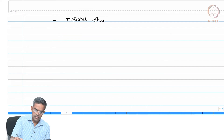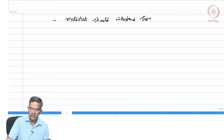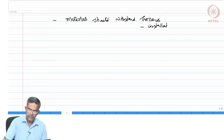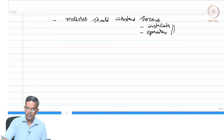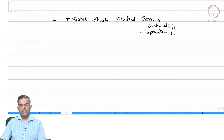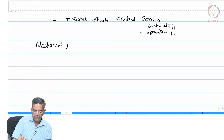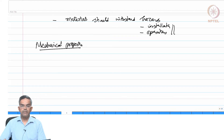Furthermore, materials should withstand hazards that arise during installation and operation. Under this context, we ask: what mechanical properties are important and which properties reflect these requirements?